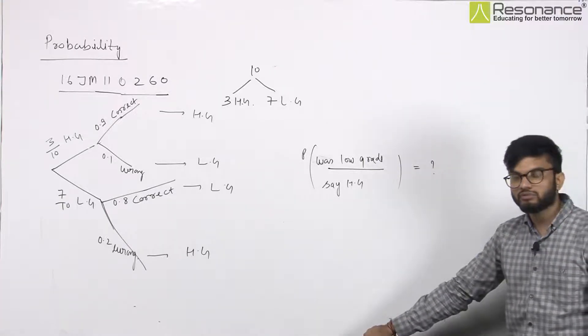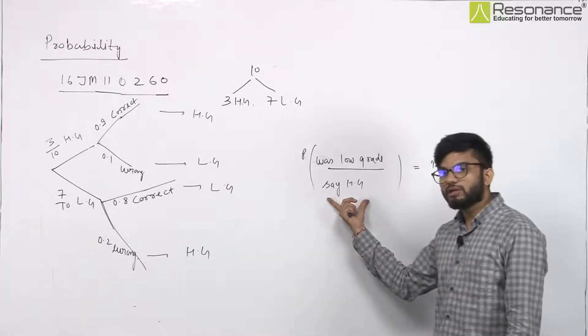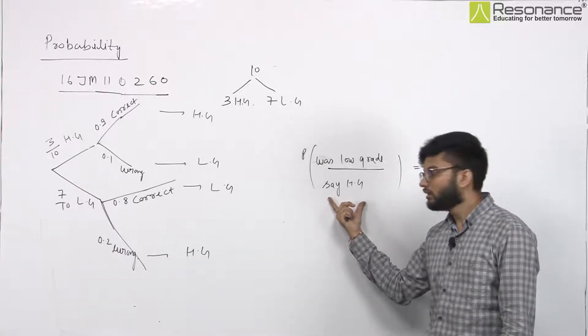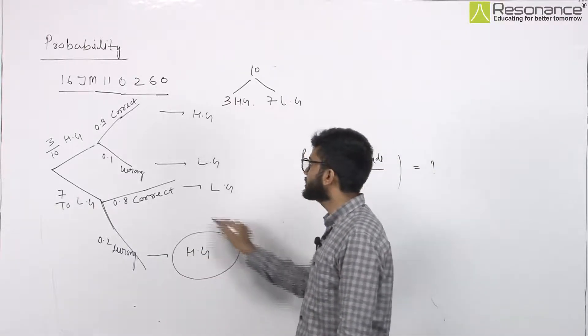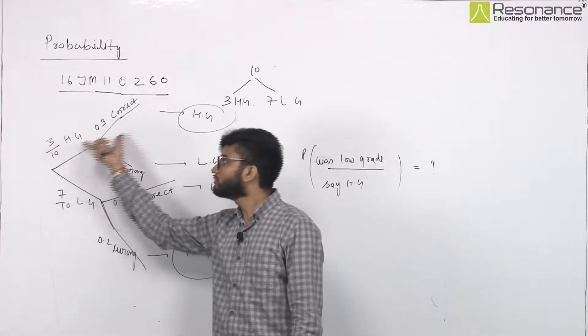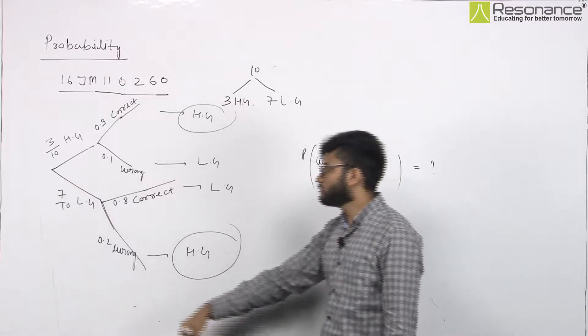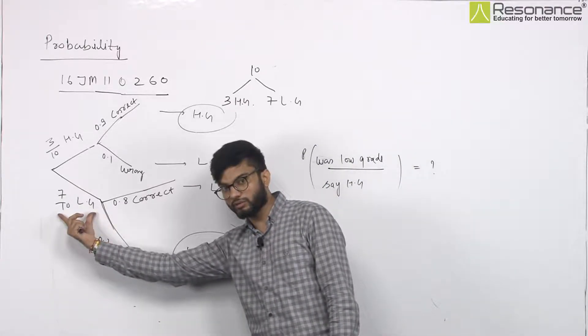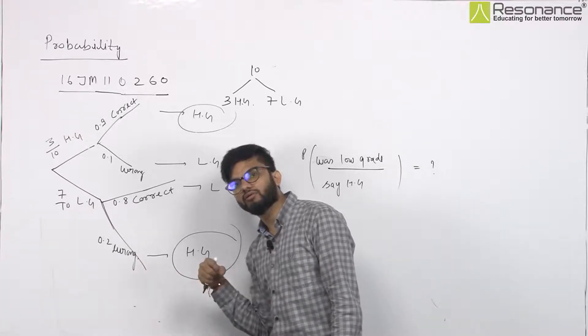So again, this is the conditional probability question. What has been said? Modi ji has said that it is high-grade. What was the chances that it was low-grade? You can understand how high-grade is, where can it be. How can it be? If it was really high-grade, and Modi ji has also told it, so it has been a high-grade. The other thing is, you can tell it is low-grade with 0.2 probability, which is low-grade.